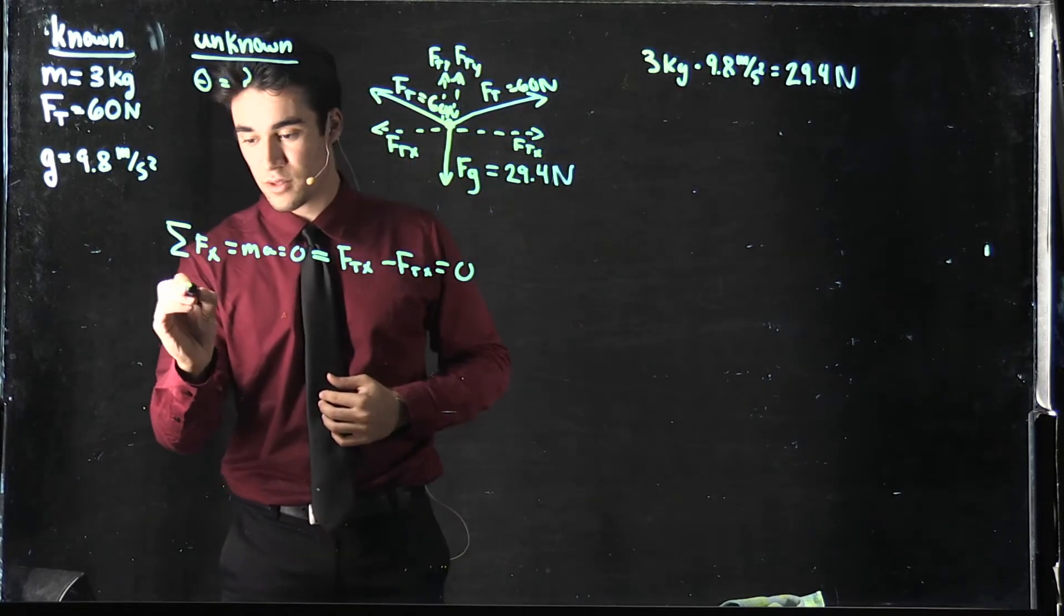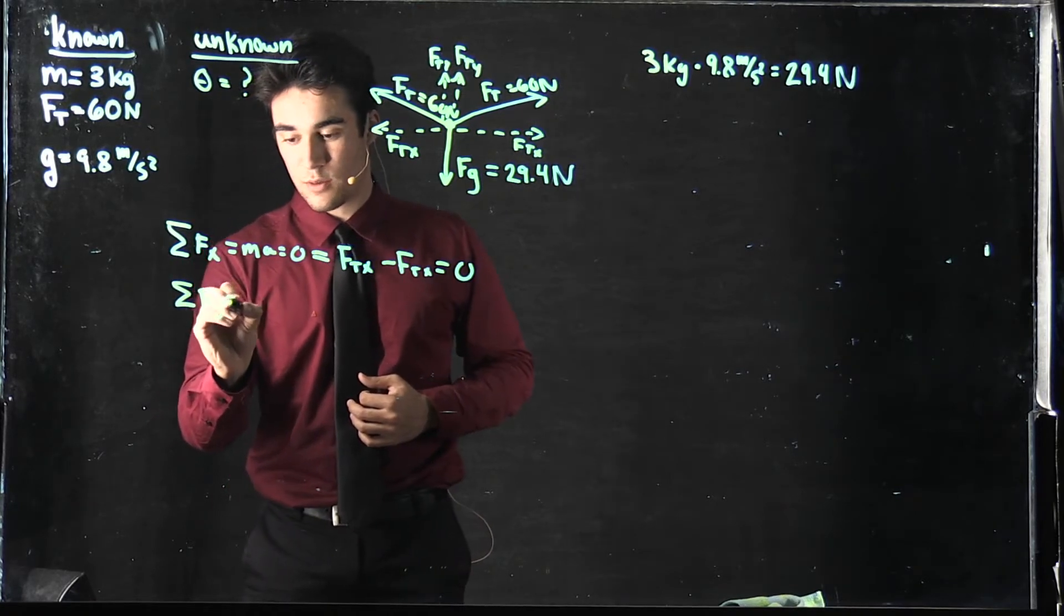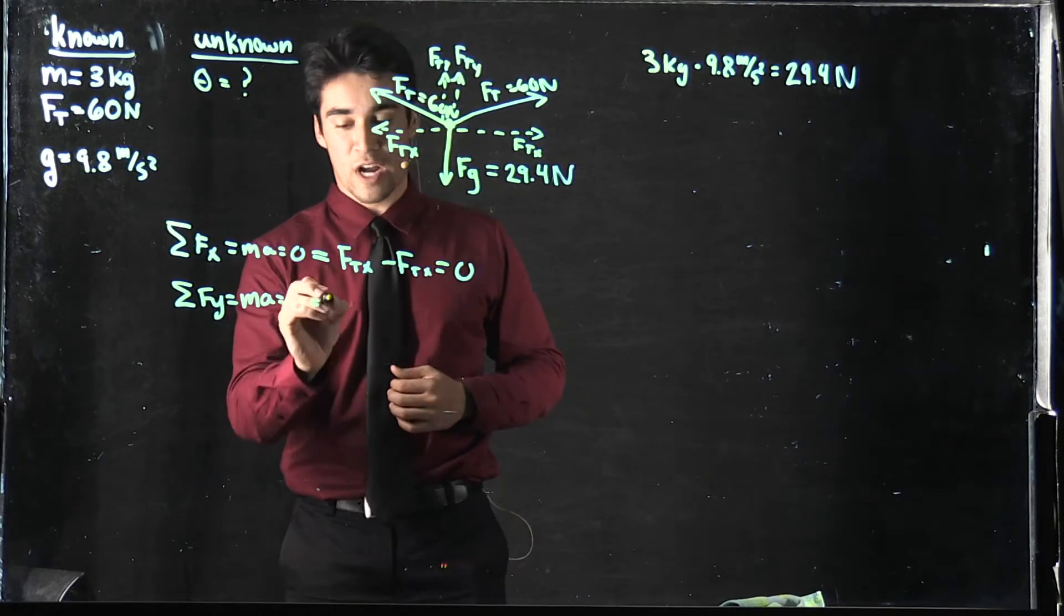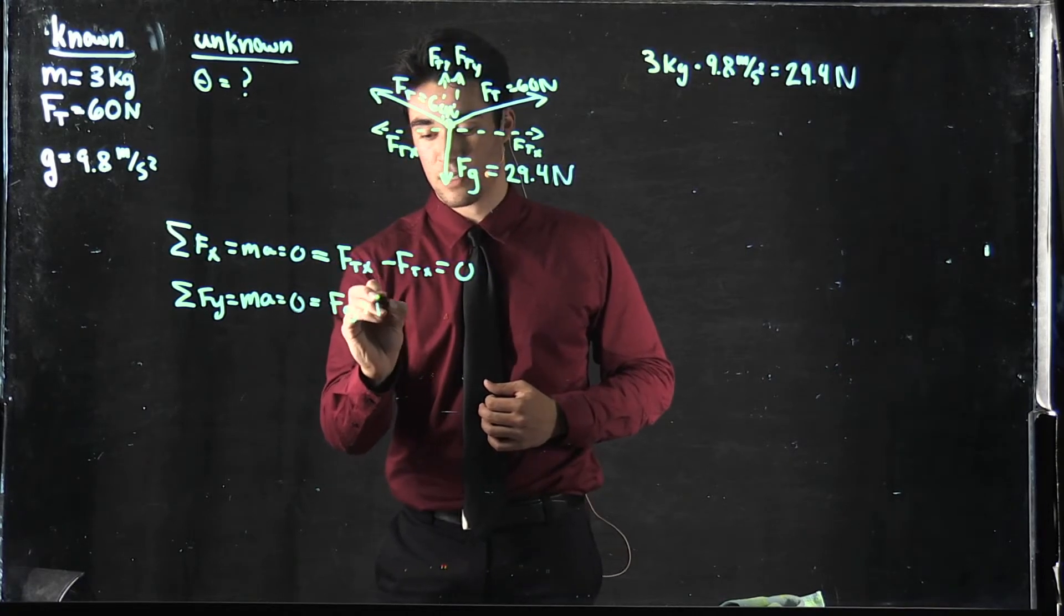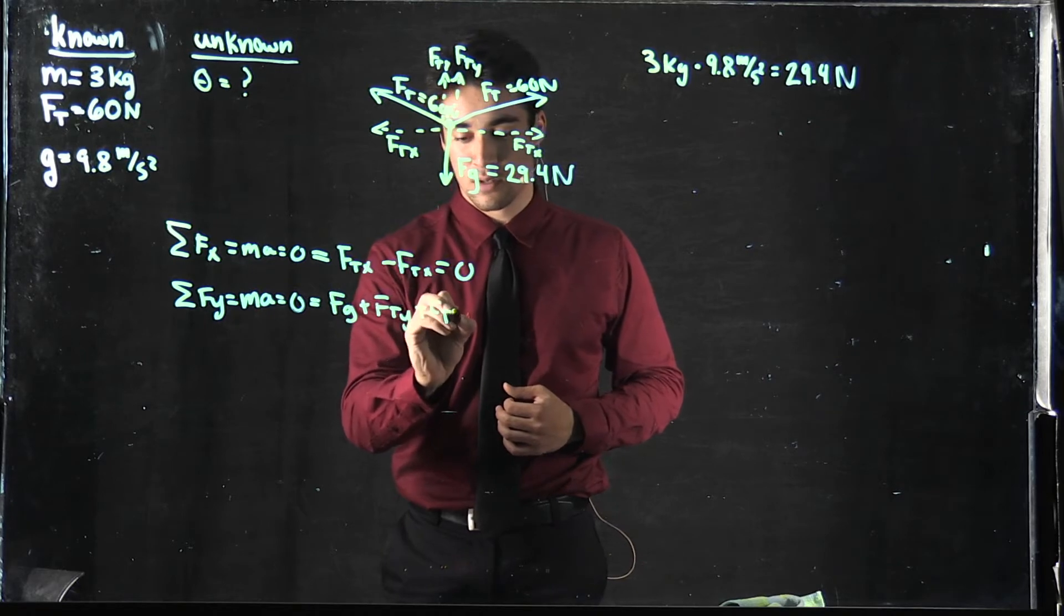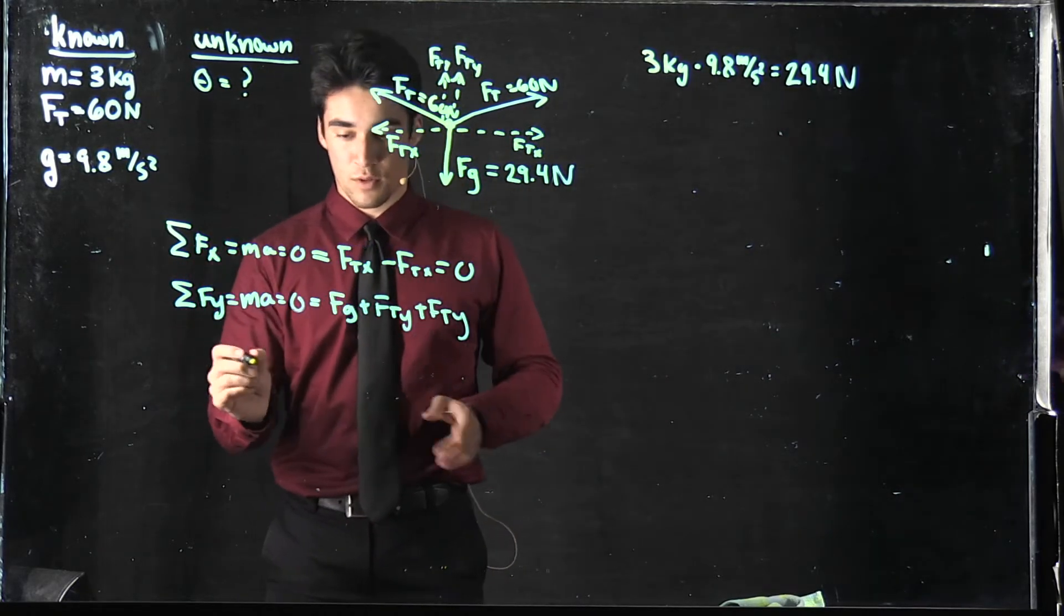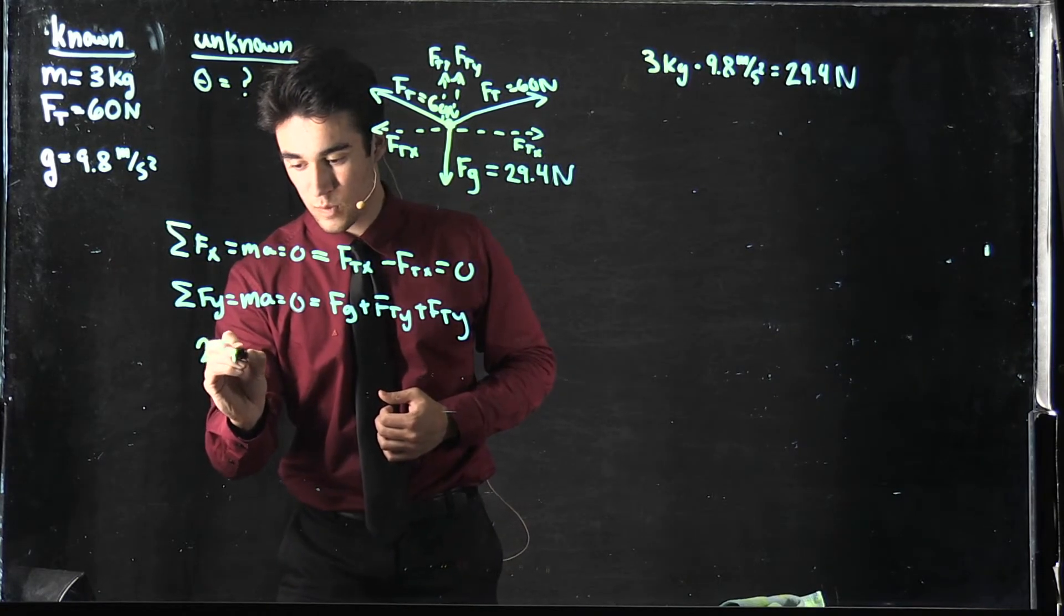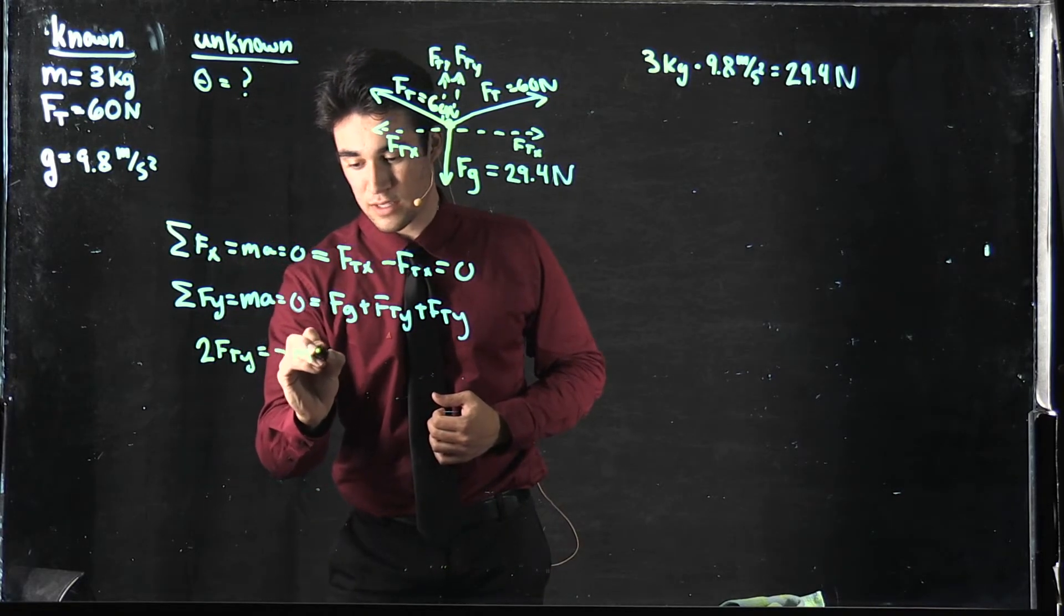In the y direction, however, we have a different situation. Sum of forces in the y direction equals ma, which equals zero, but it equals the force of gravity plus the force of tension in the y direction, plus another force of tension in the y direction. We can find the force of tension in the y direction. 2Fty equals negative mass times gravity.